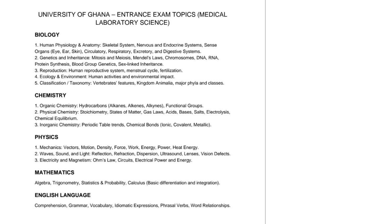Now let's look at chemistry. Under organic chemistry, you are supposed to look at hydrocarbons — that is alkanes, alkenes, and alkynes — in terms of their structures and naming reactions, that is combustion, substitution, and addition. You are also supposed to look at functional groups: alcohol, acids and esters, and their properties.